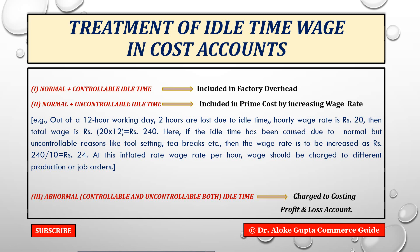If idle time is normal and controllable in nature, it should be included in factory overhead. If it is normal and uncontrollable, it should be included in prime cost by increasing the wage rate. For example, suppose out of a 12-hour working day, two hours are lost due to idle time caused by uncontrollable reasons like tool setting and tea breaks. The hourly wage rate is ₹20, so the total wage for the day is ₹20 × 12 = ₹240.